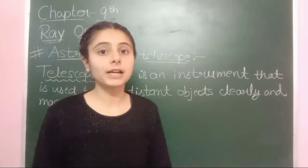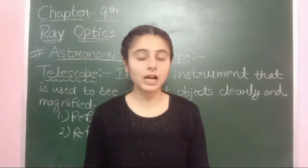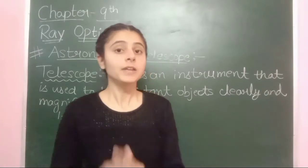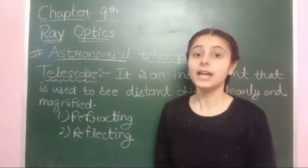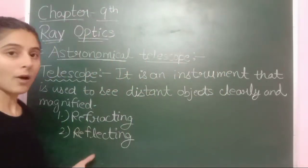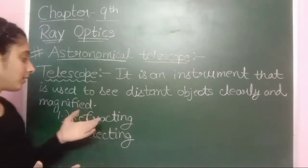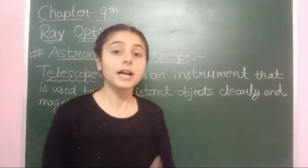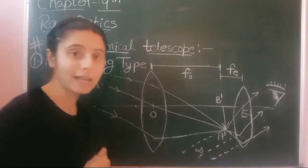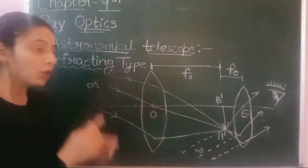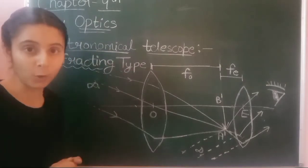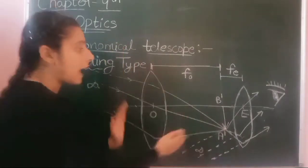That is about the astronomical telescope. We will now derive the magnifying power formula for the astronomical telescope, just as we derived it for the simple and compound microscope. We will derive it for both types. Our main focus right now is on the refracting type telescope. Now you can take a screenshot.